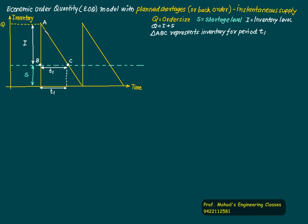Triangle ABC represents the inventory for period T1. Triangle CEF represents the shortage for period T2. T1 plus T2 is one cycle period.